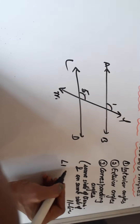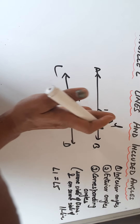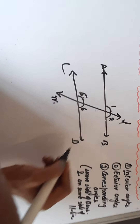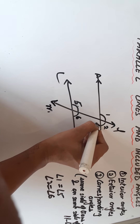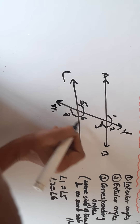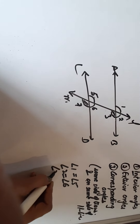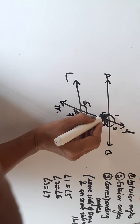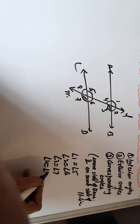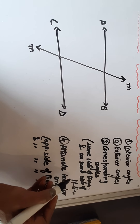So numbering all eight angles 1 through 8: angle 1 is equal to angle 5, angle 2 is equal to angle 6, angle 3 is equal to angle 7, and angle 4 is equal to angle 8. These are the corresponding angle pairs.